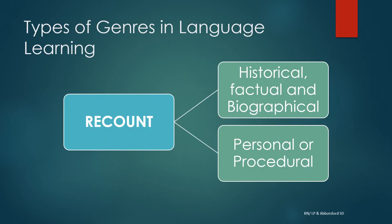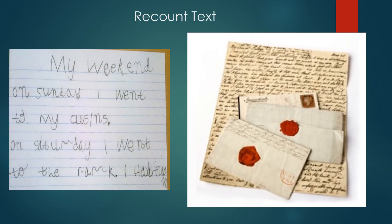The purpose of a recount text is to retell and evaluate events and experiences in the past in the order that they happened. Some examples might include diaries, letters, journals, and so on. Here are some examples: on the left we see a journal entry, and on the right we see some primary source material for social studies.